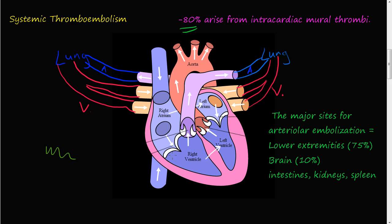75% of this 80% come from the left ventricular wall. So if you have a little blood clot here, the majority of this 80% come from mural thrombi that are associated with the ventricular wall.